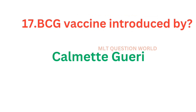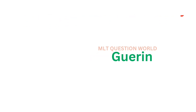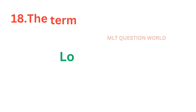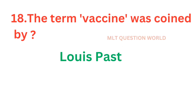Question number 17: BCG vaccine introduced by? BCG vaccine is the vaccine against tuberculosis, and it is introduced by Calmette and Guérin.